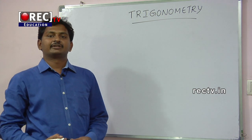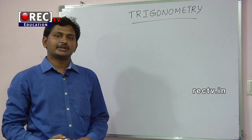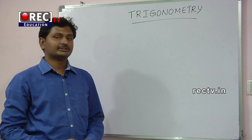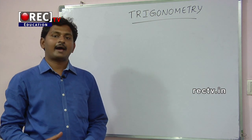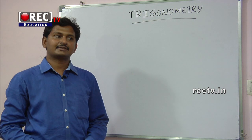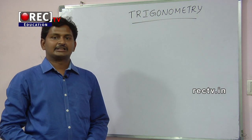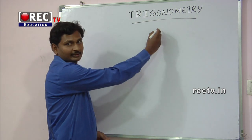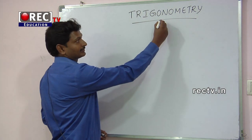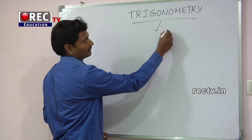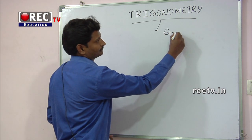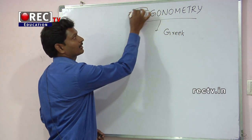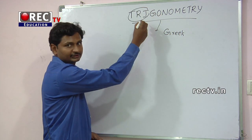Trigonometry is a very important branch of mathematics. It deals with the angles and the sides of triangles. The word Trigonometry came from the Greek language, and it is the combination of three words.